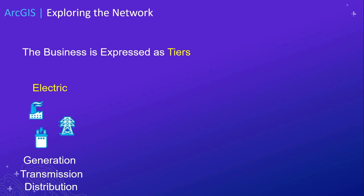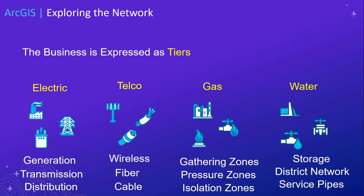Looking at the operational network again, the business is expressed as tiers. Electric has generation, transmission, and distribution, all with separate schemas and rule bases. Telco may have networks dedicated to wireless, fiber, or cable. Gas may have gathering zones, pressure zones, isolation zones, or cathodic protection zones, each with different rules. Each can be interconnected. Water has storage areas, district networks, and service territories.